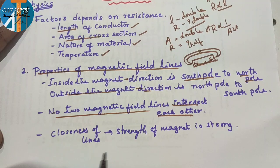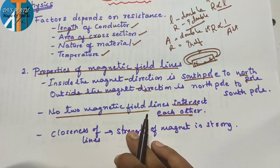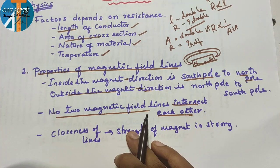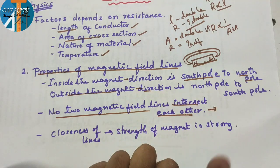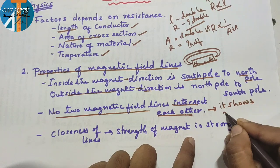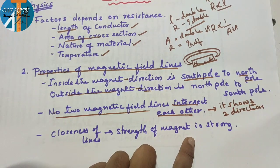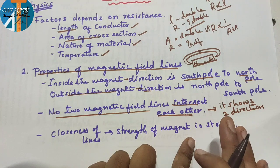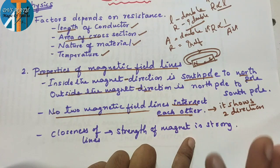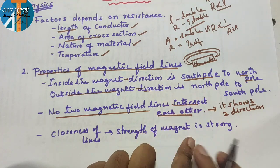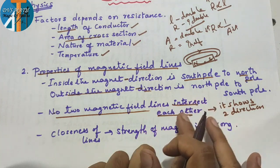Next point: no two magnetic field lines intersect each other. If asked to give a reason — if they intersect each other, it would show two directions at one point, which is not possible. That is the simple answer. Practice this point: no two magnetic field lines intersect each other.